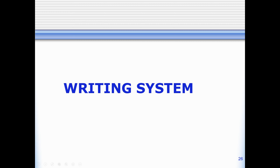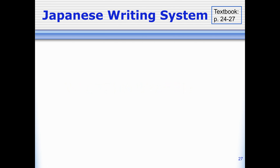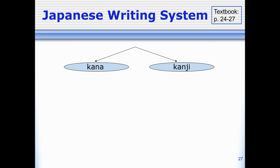For the next video, I want to introduce to you all a little bit about the Japanese writing system. Some of you may know a little about Japanese writing already. Probably the most famous thing about the Japanese writing system is that it has three different ways of writing.